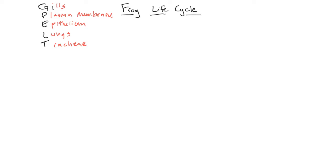How many of these have you used? All of them — you've used lungs. And at one time in your development, you also directly exchanged gases through your plasma membrane. When you were an itty-bitty zygote, up until you developed lungs, you just diffused through there.